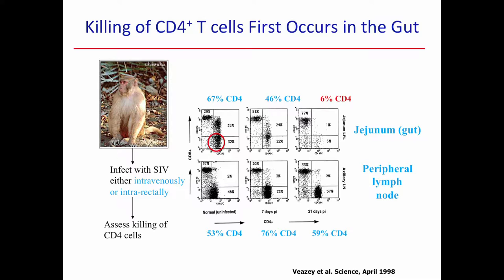What you see is that in this animal, about 30% of the T cells in the gut are CD4-positive, and in the peripheral lymph node it's a little bit higher. However, three weeks after infection, what you see is that in the jejunum, in the gut, those cells are really wiped out — gone. You've gone from 30 down to 5%, whereas the frequency in the peripheral lymph node really hasn't changed too much. This is one example of the way in which we think about both HIV and SIV as a gut-tropic virus.